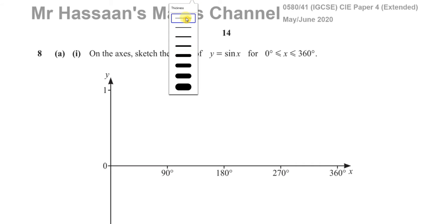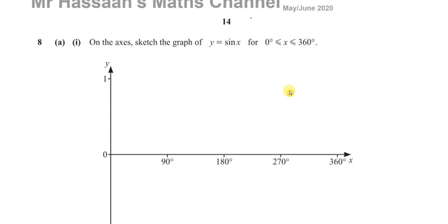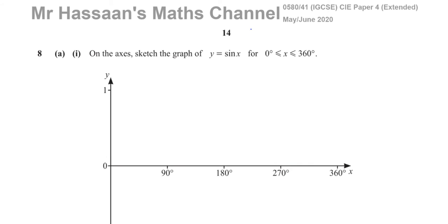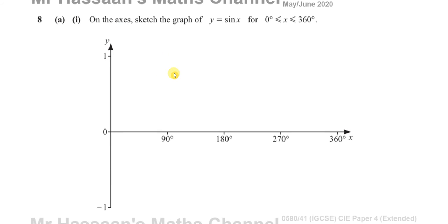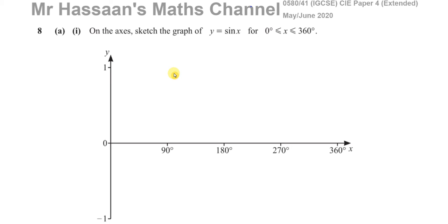This question is about trigonometry. The first part asks us to sketch on the axis the graph of y equals sine x between 0 and 360 degrees. We should know what the sine curve looks like. If you forget, you can use your calculator: sine of 0° is 0, sine of 90° is 1, sine of 180° is 0, sine of 270° is -1, and sine of 360° is 0. So it's a curve that has this shape.